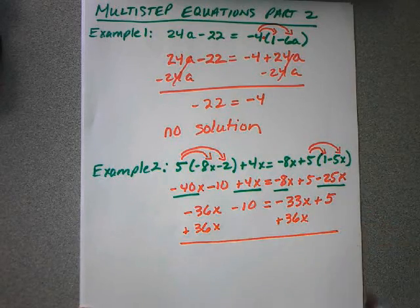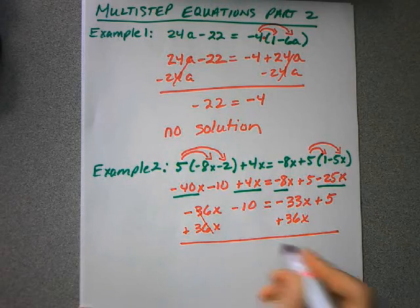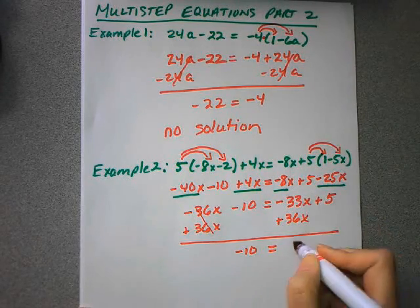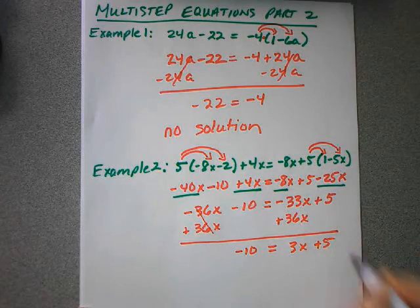And simplify. These subtract to zero. I have negative 10 equals, when I combine those, I get 3x plus 5.